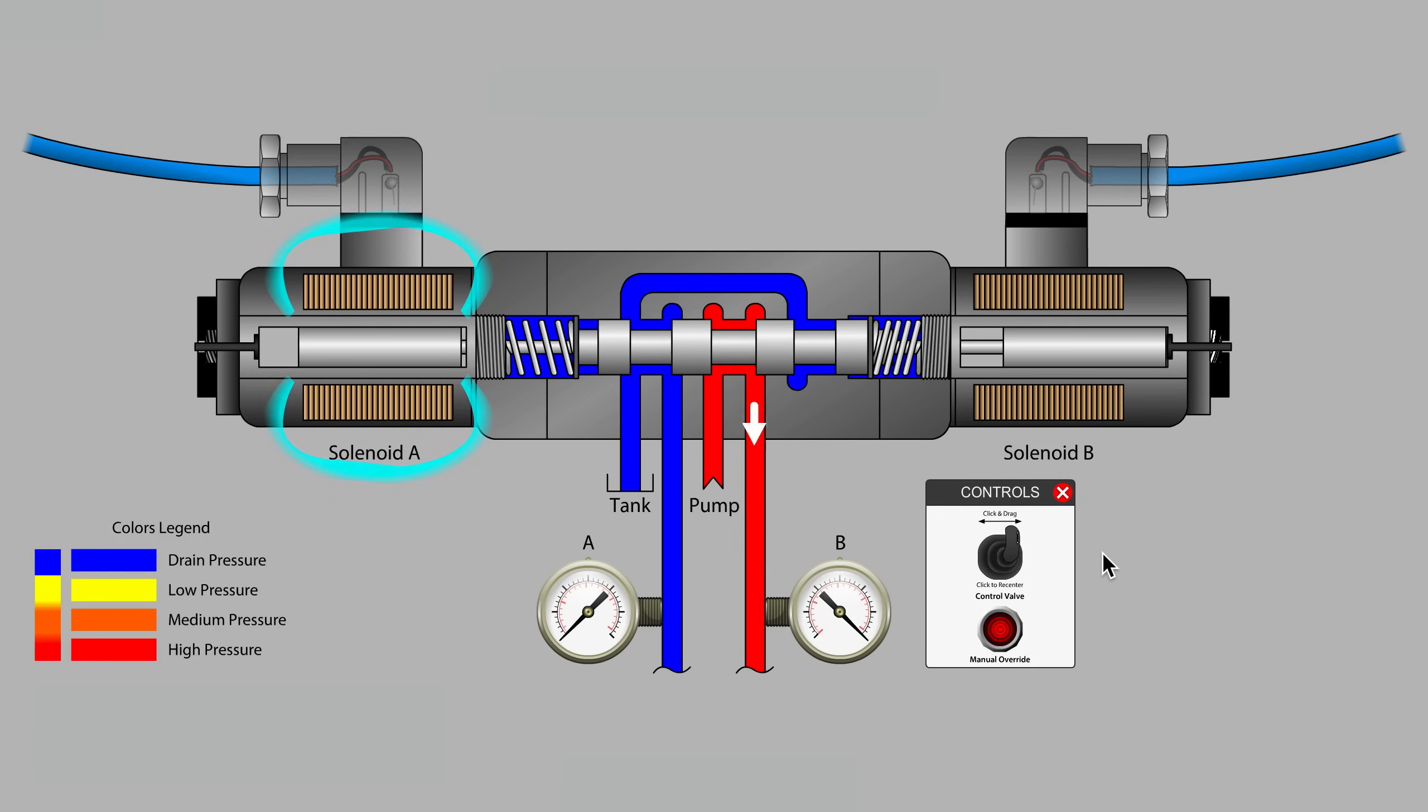When the valve is returned to neutral, notice that the gap between the pushpin and spool is now on the right-hand side. Whichever side of the valve has the pushpin gap has a slight force advantage when that solenoid is next energized.